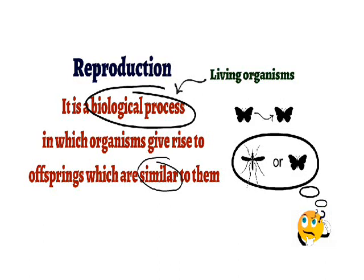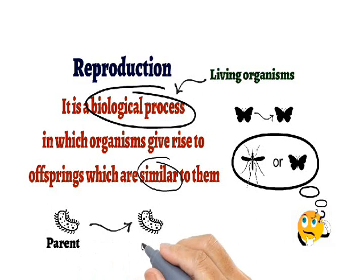In some cases, the parent and offspring are identical — exactly similar to each other. For example, in the case of bacteria, the offspring and parent are identical both genetically and morphologically. So parent and offspring will either be similar to each other with some differences, or they will be exactly identical.